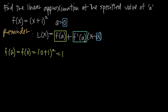Now we need to find f prime of a. First we'll find f prime by taking the derivative of the original function. So f prime of x is going to be equal to — in order to take the derivative of this function, we're going to need to use the chain rule. Now we could foil this out, since this is two factors of x plus 1 times x plus 1 because we're squaring x plus 1. So we could foil it out and use power rule, or we could just use chain rule.